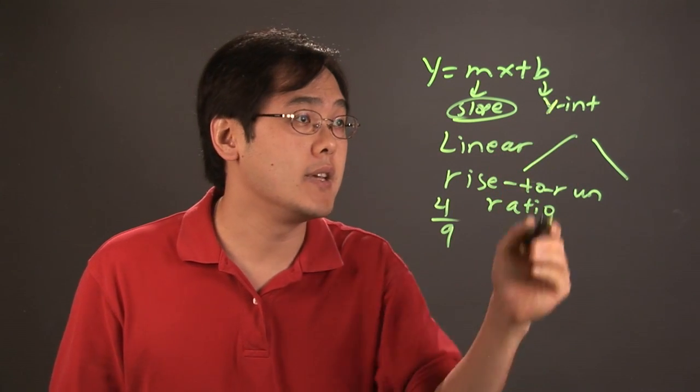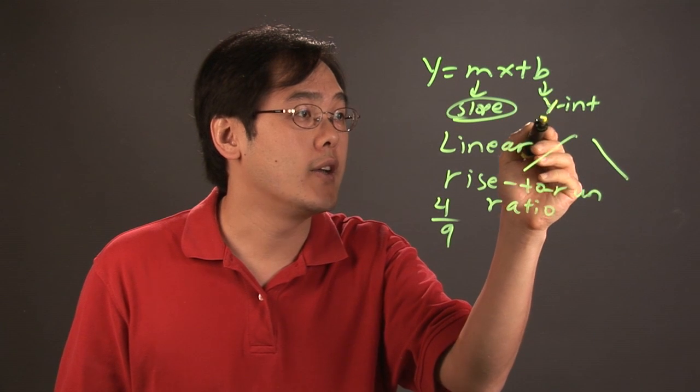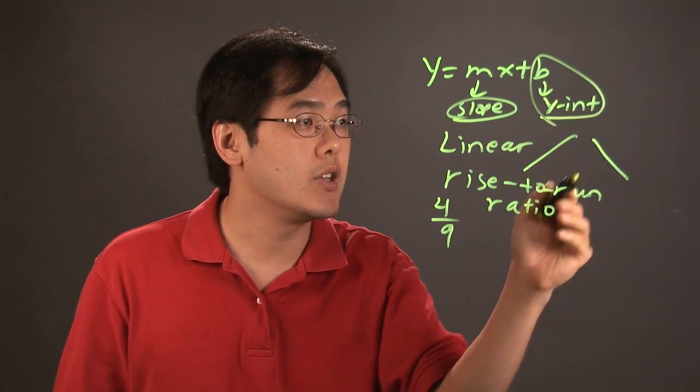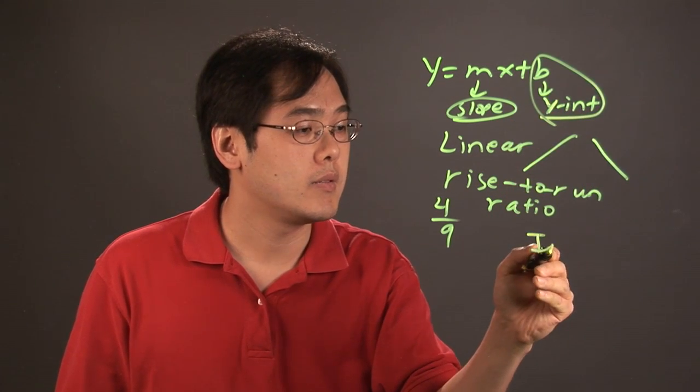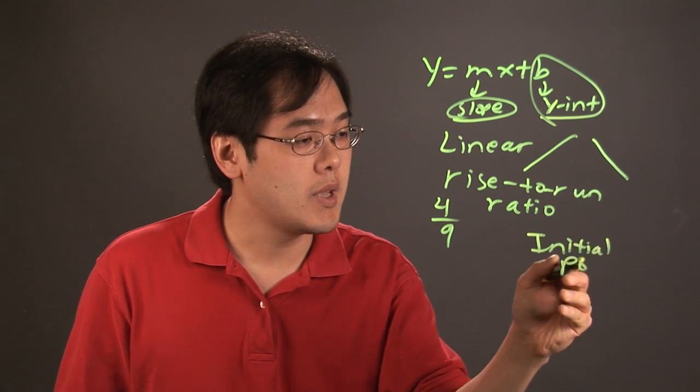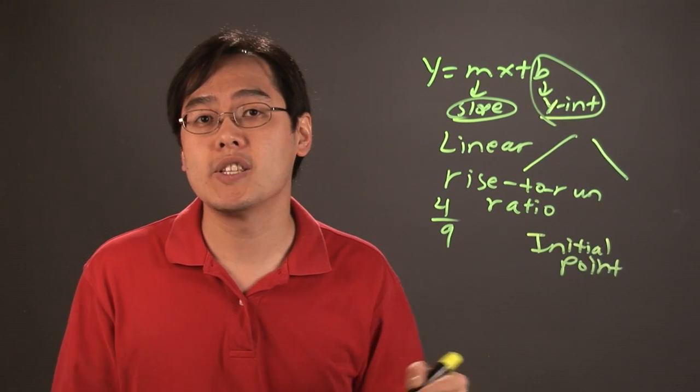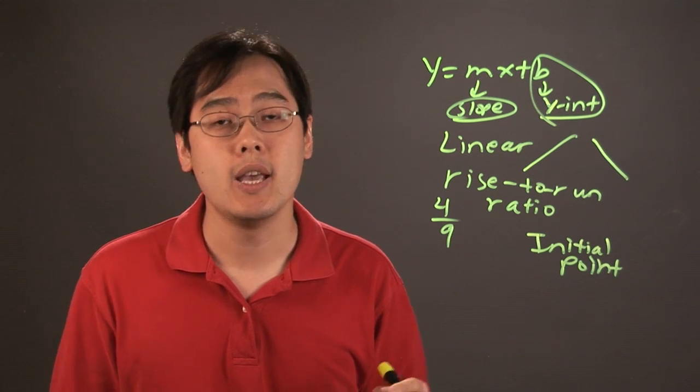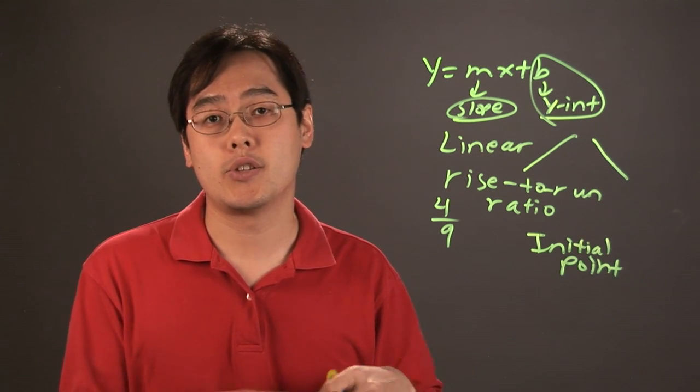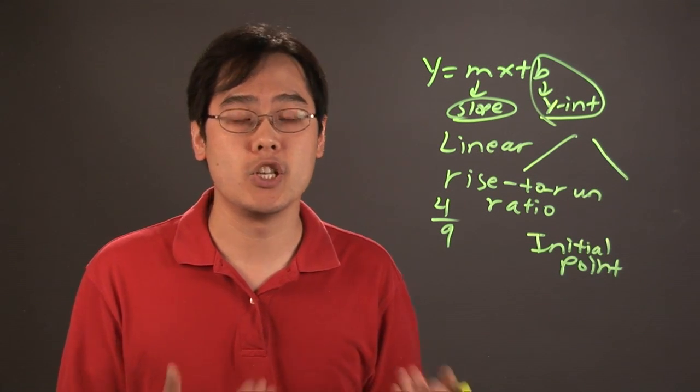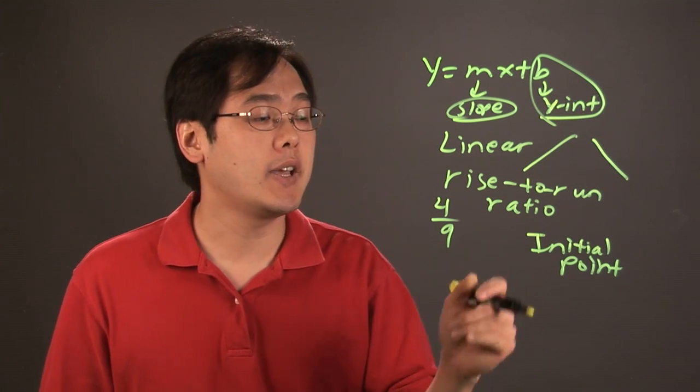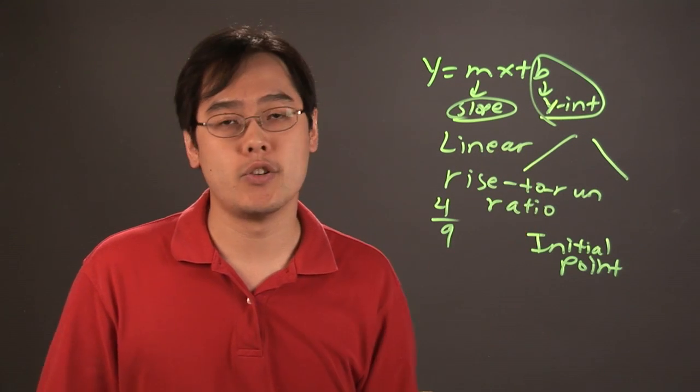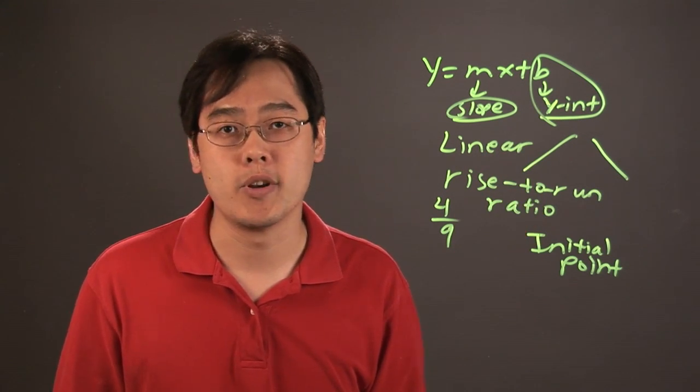What you can think about is to help the reader understand what the y-intercept is, you can use something that can be construed as an initial point, a starting point if you will, of a particular object. It can be the initial startup cost or the initial position of an object. But basically, whatever it takes to help the student understand that they have to use the y-intercept in slope-intercept form.